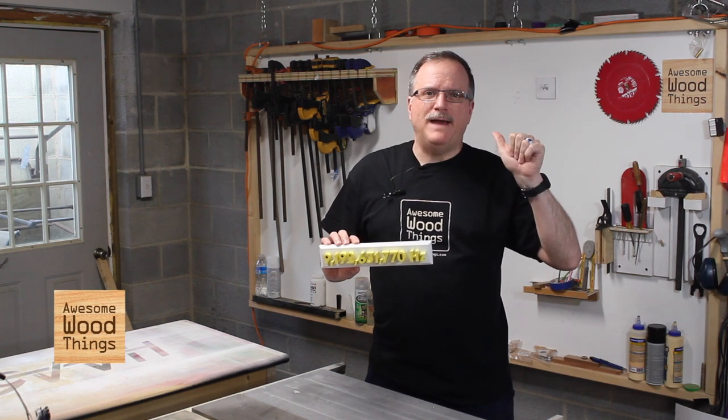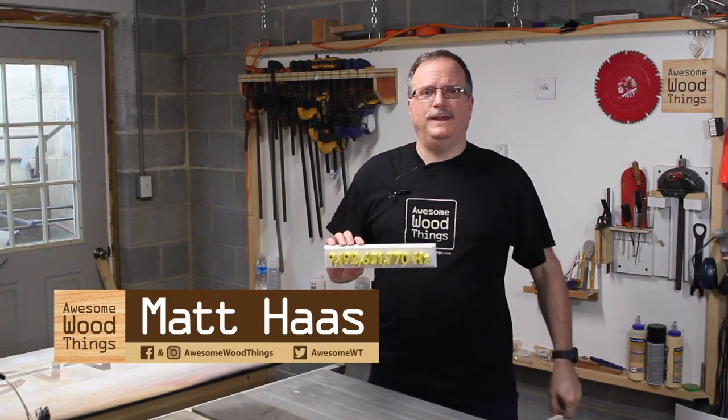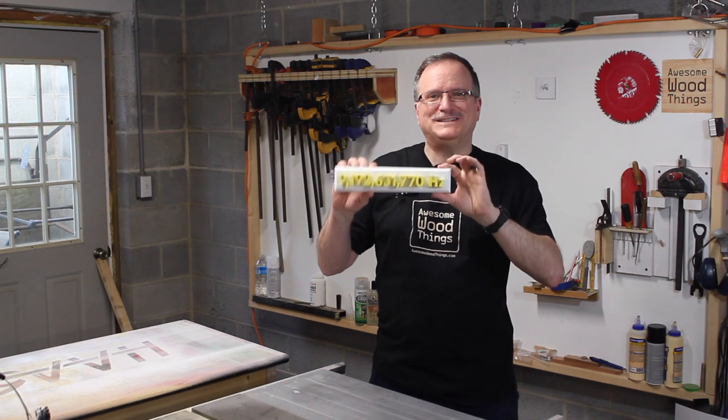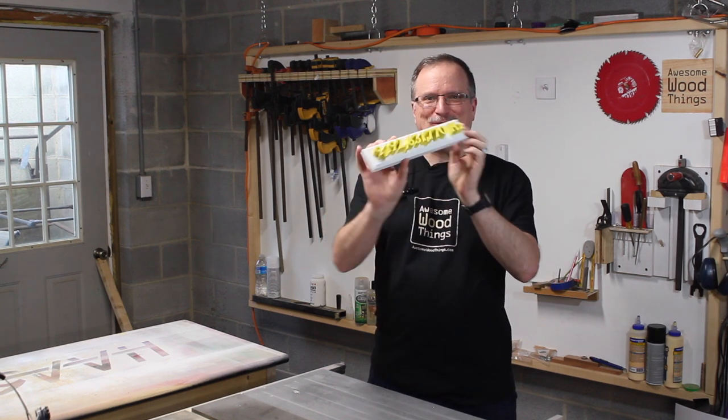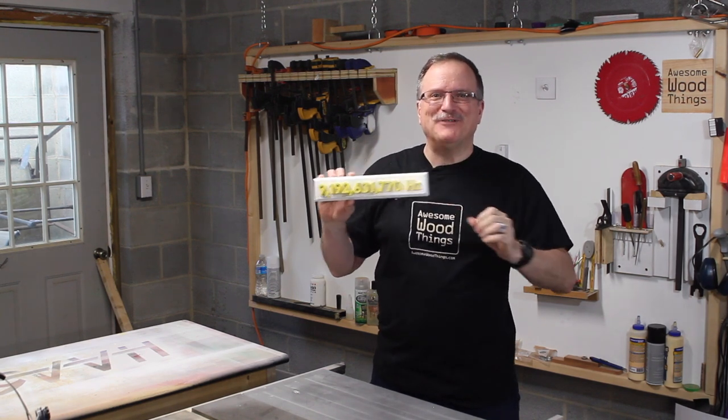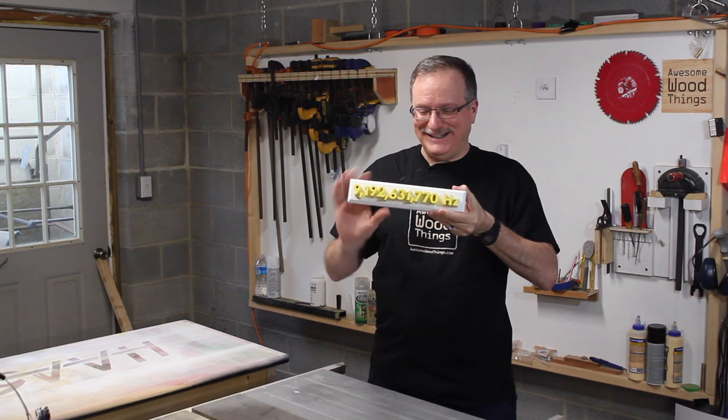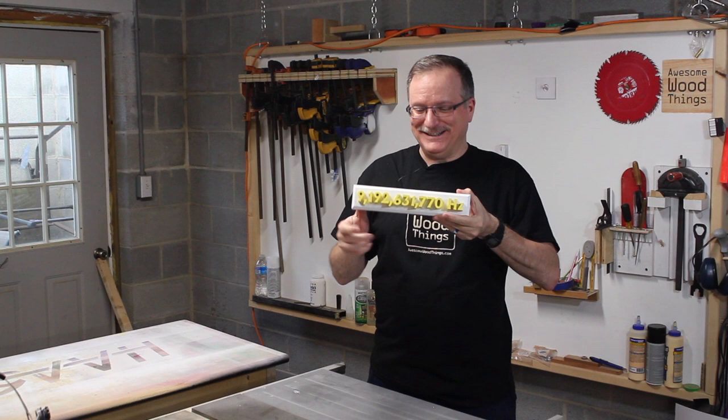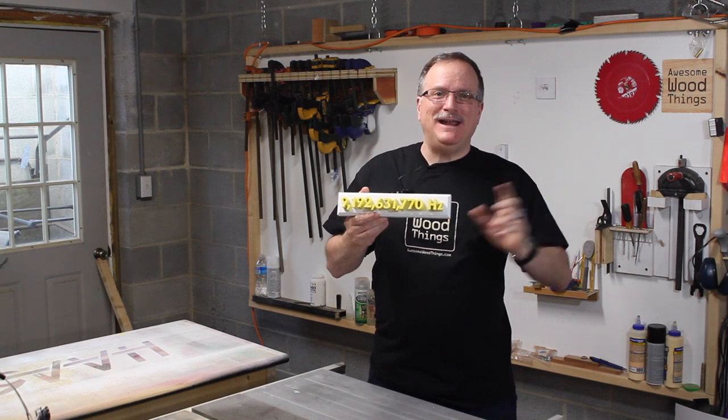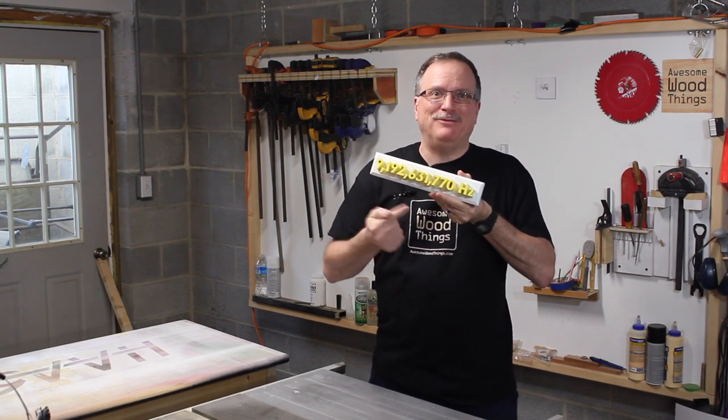Hello Internet. I'm Matt Haas. This is Awesome Wood Things. I made this cool sign. It is super 3D, kind of looks like something right out of the 80s. I have a mustache now. Love it or hate it? Let me know in the comments. Stick around. I'll show you how I made it and I'll tell you a little bit more about this.